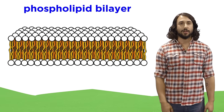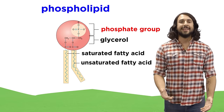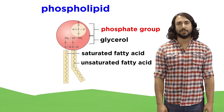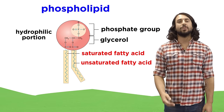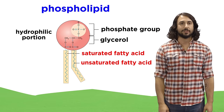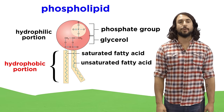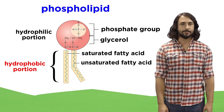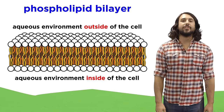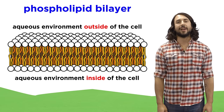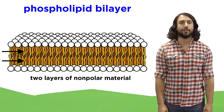It's called a bilayer because it's two layers of phospholipids, which each have a phosphate group similar to the carboxylate group in the soap molecules, with formal charges that can interact with water molecules, and nonpolar fatty acid tails — one saturated, the other unsaturated — which prefer to stay hidden from water molecules. One layer faces outwards to the aqueous environment outside of the cell, and the other layer faces inwards to the aqueous environment inside the cell. That means there are two layers of nonpolar material in between.